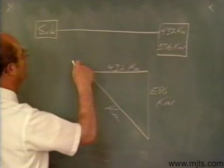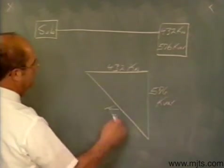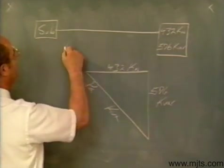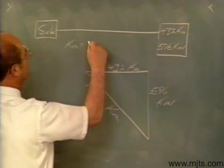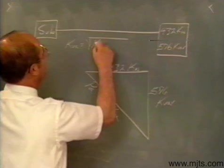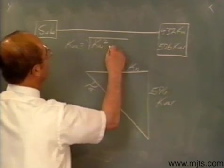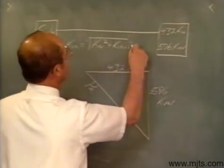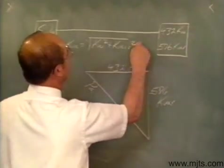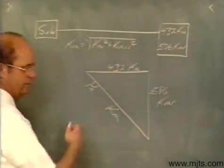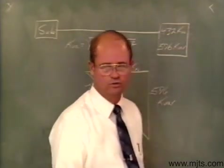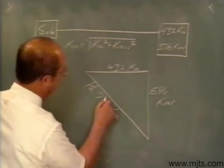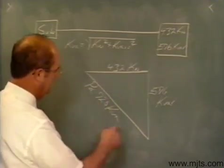In other words, my P sub A, my apparent power, my KVA is going to be equal to the square root of my KW squared plus my kVAR squared. And if you go through and calculate that out, it's been done for us in the example, you'll see that we would have 720 KVA.